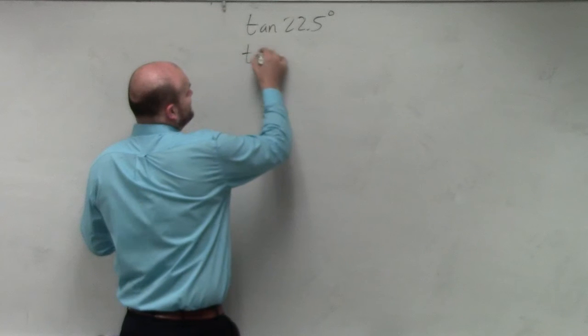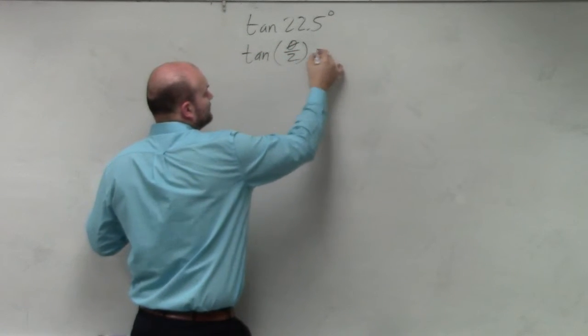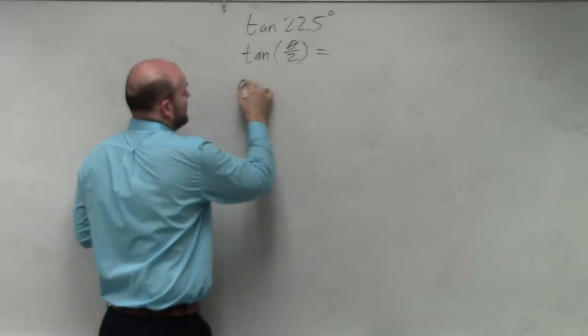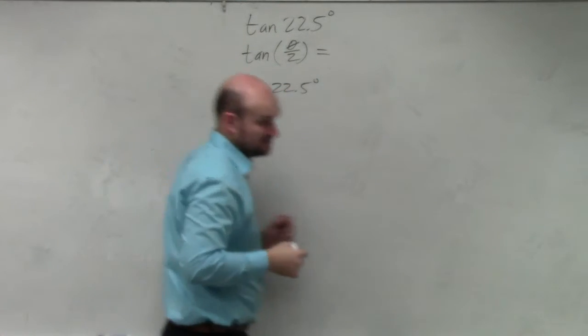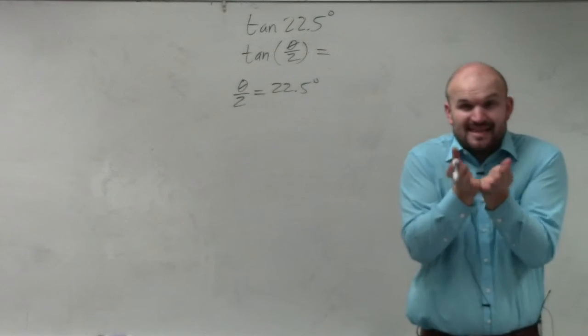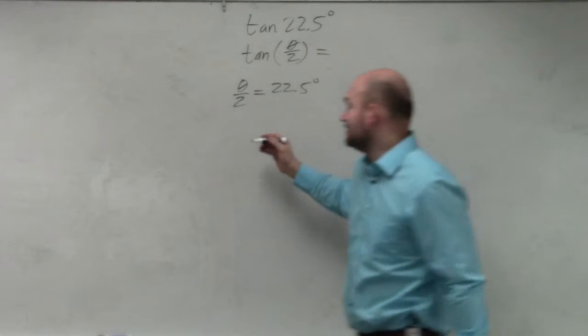What if we said tangent of this is theta over 2? So now we're saying theta over 2 is equal to 22.5 degrees. We're going to say that angle is half of theta. So therefore, what exactly is theta?